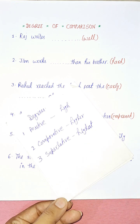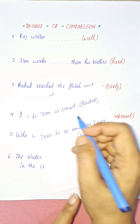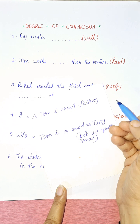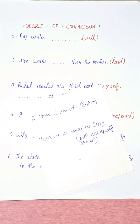Now let's talk about positive degree first. We use the positive degree of adjectives where there is no comparison being made. For example, 'Tom is smart' — there is no comparison here, so it is a positive degree. Similarly, 'Tom is as smart as Jerry' — no comparison is being made between persons, animals, or things.